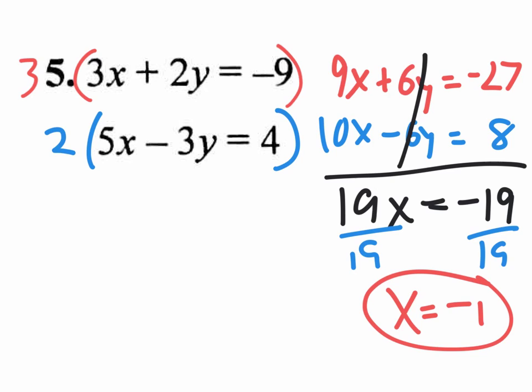Now once I have one answer, all I got to do is plug it into any equation I want and find Y. So which one, top or bottom? Doesn't really matter. I want to go with, I think I did bottom last time. Let me go with top this time. So on top, it says 3X, so I'm going to write 3, but instead of X, I'm going to put parentheses, plus 2Y equals negative 9. Once again, I just copied it, 3X plus 2Y equals negative 9. But instead of X, I put parentheses. Why? Because there's the X value right here. I'm going to take this negative 1, and I'm going to plug it in right there, into the parentheses.